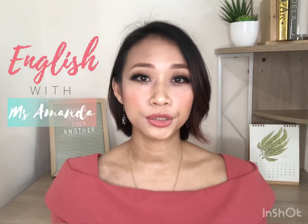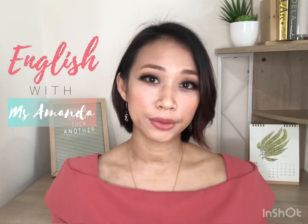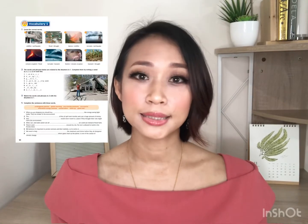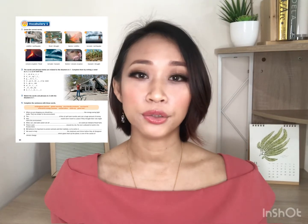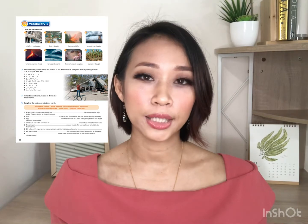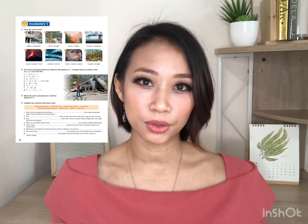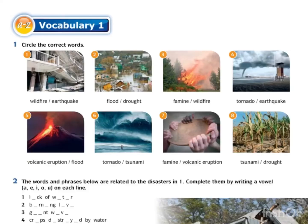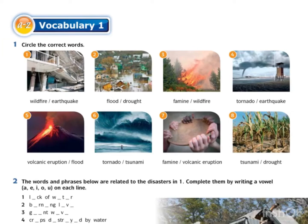Hi everyone, today we're going to do vocabulary on page 60, unit 5 in your English Download textbook. Exercise 1. Circle the correct words. Bulatkan jawapan yang betul.